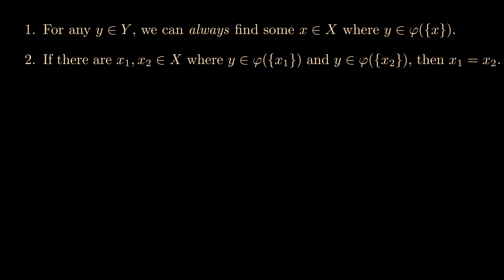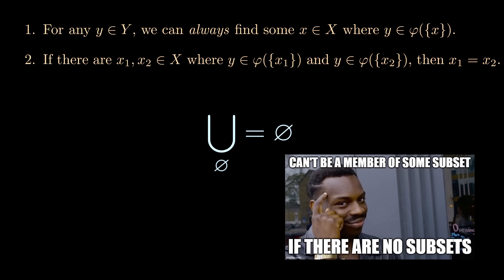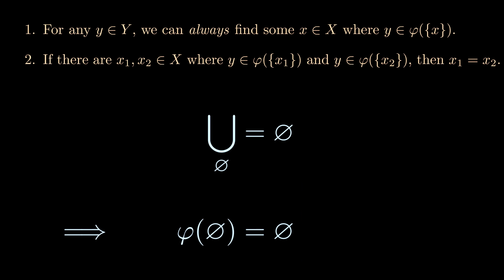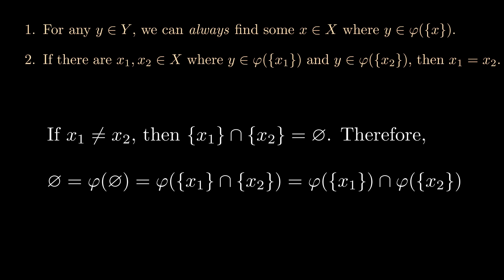As for the second condition, we basically dualize our argument. First, note that an empty union always yields the empty set. It's impossible for any element to be contained in at least one set of the union if there are no sets in the union at all. Therefore, phi must send the empty set in X to the empty set of Y. In particular, since the intersection of distinct singleton subsets of X is empty and phi preserves intersections, it is impossible for any element of Y to lie simultaneously in the image under phi of two distinct singleton subsets of X. This completes the proof.